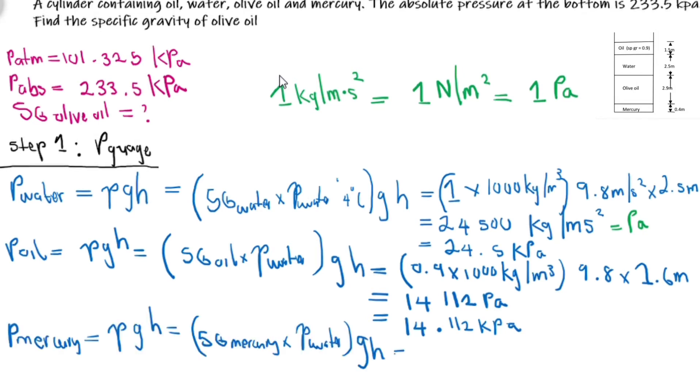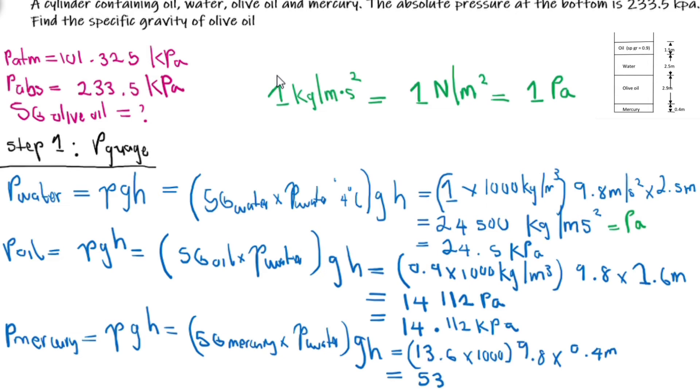Let us do the same thing for mercury. Let's substitute. We are given the specific gravity of mercury to be 13.6 times the density of water, 1000, times 9.8, times in this case we are given 0.4, so mercury is 0.4 meters deep into our tank. 53.312, already in kilopascal.